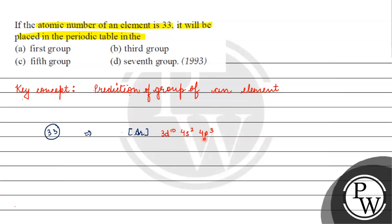If we talk about modern periodic table, according to modern periodic table this will be part of nitrogen family which is group 15. But here first, third, fifth, and seventh groups are given.